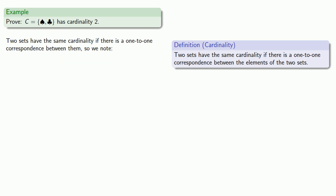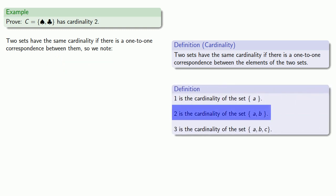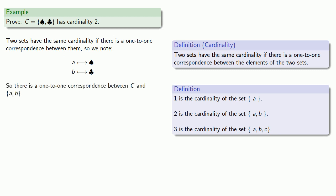Now, we did have this definition that two is the cardinality of this set. And so we can look for a one-to-one correspondence between this set and this set, which is easy enough to find. So there is a one-to-one correspondence between C and the set {A, B}. And since the cardinality of {A, B} is two, then the cardinality of C is equal to two as well.